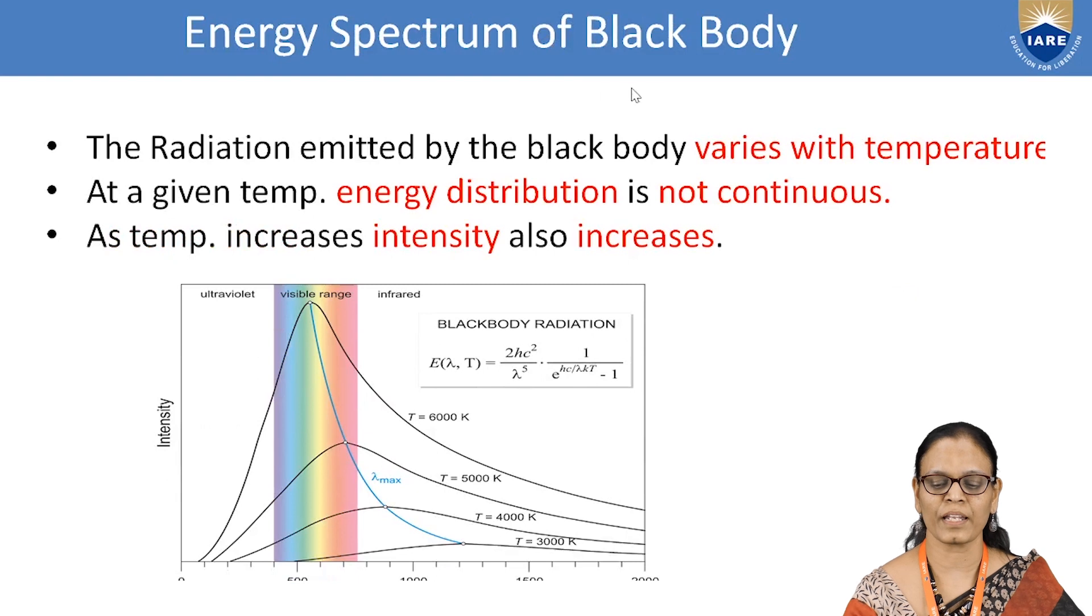Let us now look at the energy spectrum of a black body. The energy emitted by the black body is given by the expression E is equal to 2Hc square upon lambda power 5 into 1 upon E power Hc upon lambda kT minus 1. When we plot a graph for wavelength versus intensity, for different temperatures, the curve seems to be different and the curve is not continuous at a given temperature.